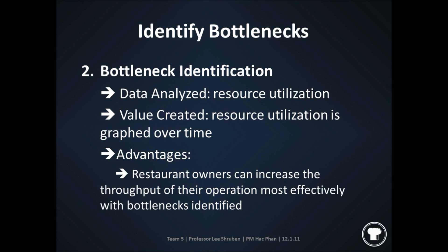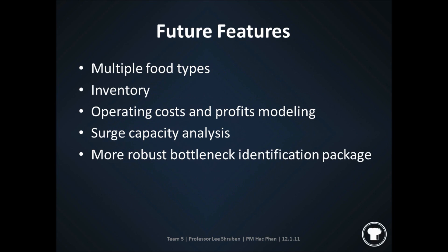The second type of data displayed by the restaurant simulator pertains to resource utilization. By analyzing the utilization of each resource, we can identify which ones are placed under the most strain. The resource that is in most demand is therefore identified as a bottleneck. In future iterations of the software, we plan to include support for multiple food types, inventory, real-time operating cost and profit modeling, surge capacity analysis, and a more robust bottleneck identification package.